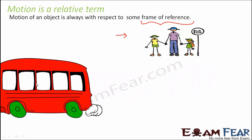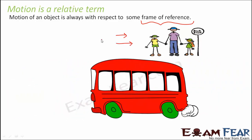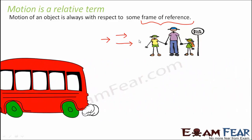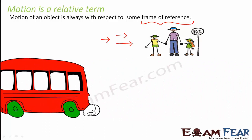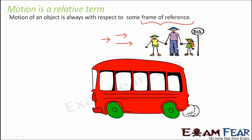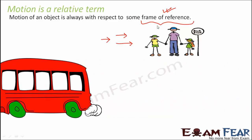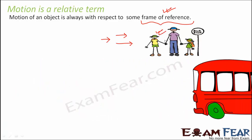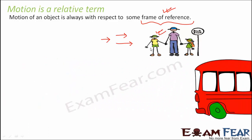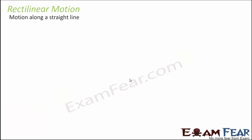The passenger sitting inside the bus considers himself at rest, but when he looks outside, he feels that the people at the bus stop and the trees are all moving in the opposite direction. So with respect to yourself you are at rest, but with respect to someone inside a moving bus you appear to be moving. That is why motion is a relative term — it depends on the frame of reference.